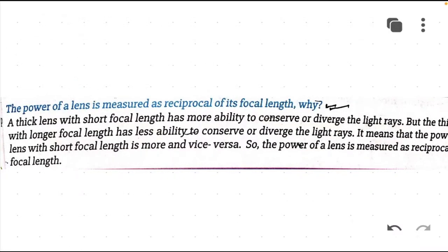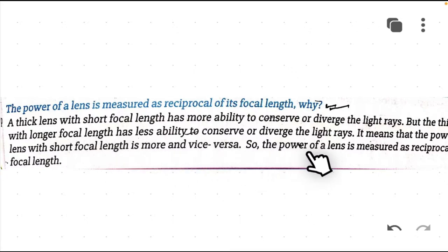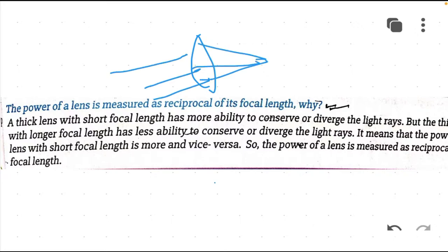This is a very important and frequently asked exam question: the power of a lens is measured as the reciprocal of its focal length — why? The answer is that a thick lens with a short focal length has more ability to converge or diverge light rays, but a thin lens with a longer focal length has less ability to converge or diverge light rays. So the power of a lens with a short focal length is more, and vice versa — power is measured as the reciprocal of focal length.